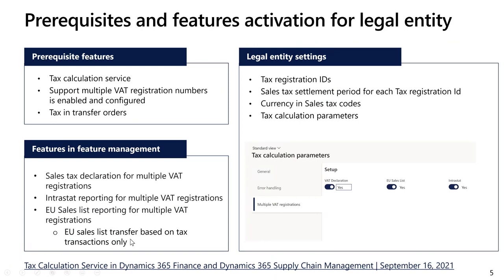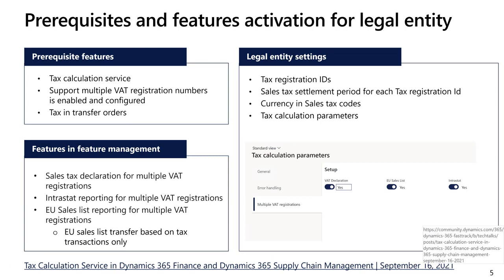Then you need to activate the new features in Feature Management: Sales Tax Declaration, Intrastat Reporting, and EU Sales Reporting for multiple VAT registrations. In case of EU Sales List, you should also activate the feature 'EU sales list transfer based on tax transactions only.' Then in the legal entity with multiple VAT registrations, you will need to create VAT IDs for each tax registration, and for each VAT ID create a sales tax settlement period and tax authority.